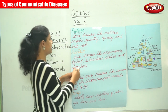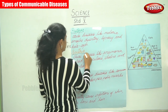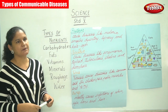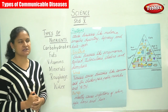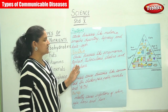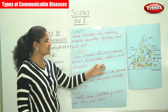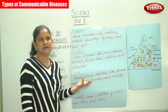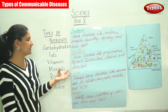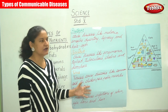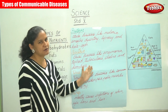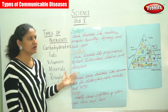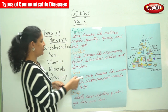The next type of germ is bacteria. Bacteria causes diseases like pneumonia, typhoid, tuberculosis, cholera, and diarrhoea.